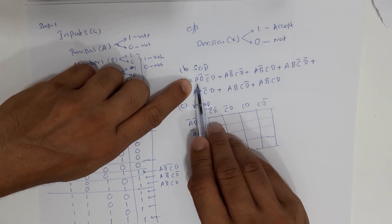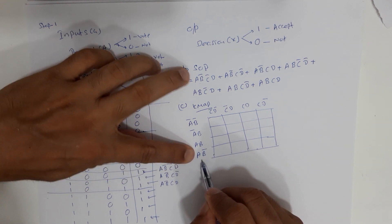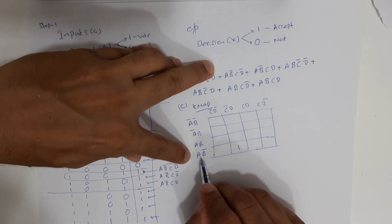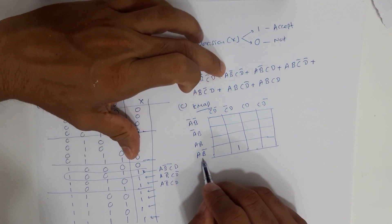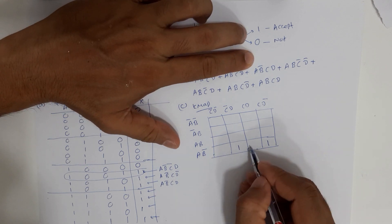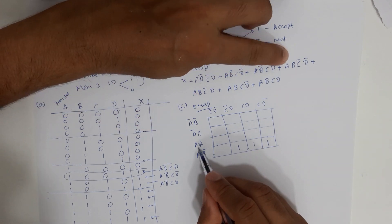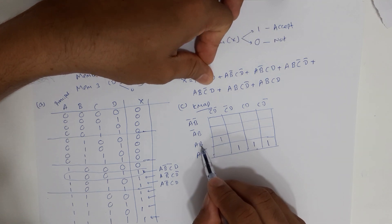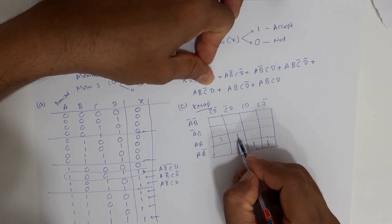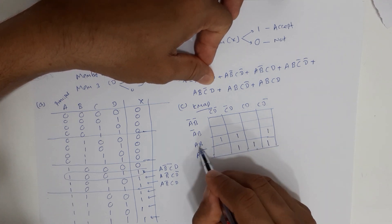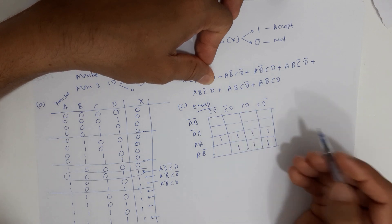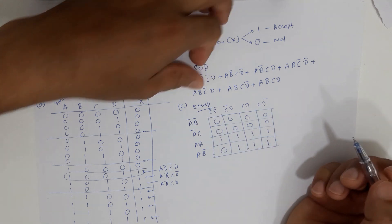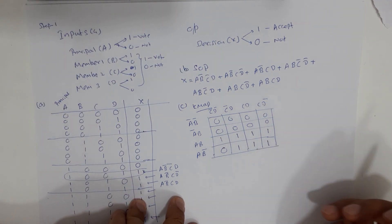We fill the 1s into the K-map based on the product terms. AB̄C̄D goes into its corresponding cell, AB̄CD̄ into the next, AB̄CD into another. Then ABC̄D̄, ABCD̄, and ABCD are also placed. All other cells are filled with zeros. Now the challenge is how to group the ones optimally.